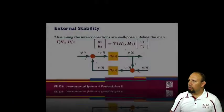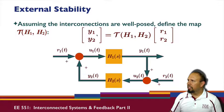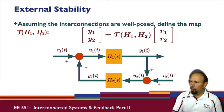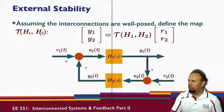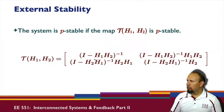And so we would have external stability of this system if this transfer function from T involving H1 and H2 is stable. And so basically we have these four transfer functions. So the system is stable if this map is stable, and so basically all four of these transfer functions need to be stable.